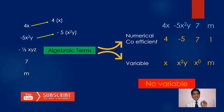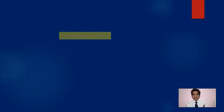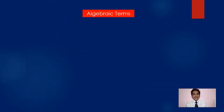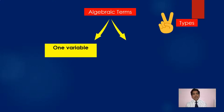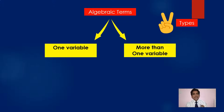So like this, every algebraic term consists of two different things: numerical coefficient and variable part. Now these algebraic terms are basically of two types — those which involve only one variable, and those which involve more than one variable.